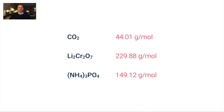CO2 is carbon dioxide — one carbon and two oxygens. In Li2Cr2O7 there are two lithiums, two chromiums, and seven oxygen atoms.